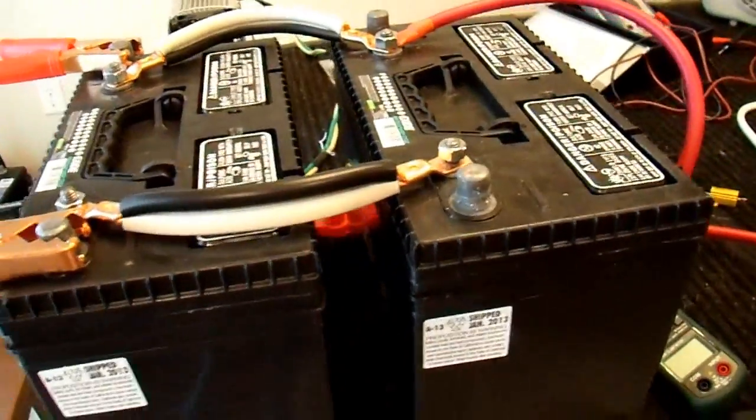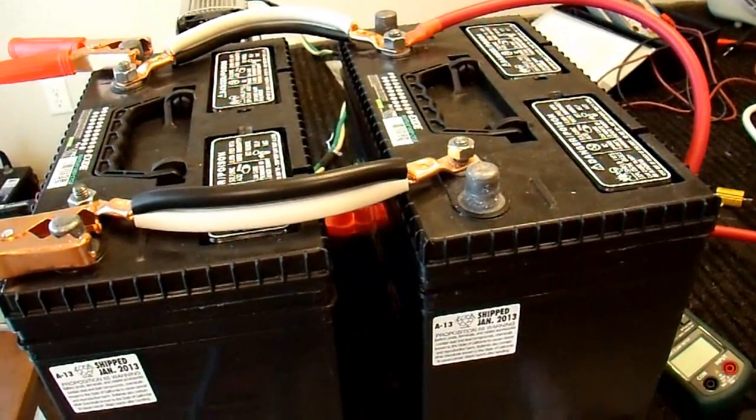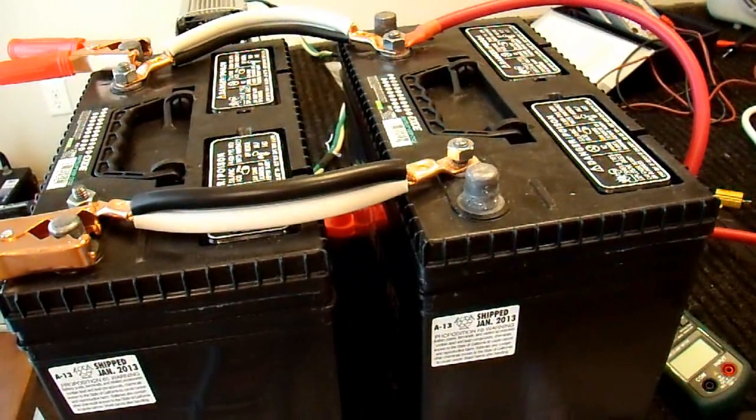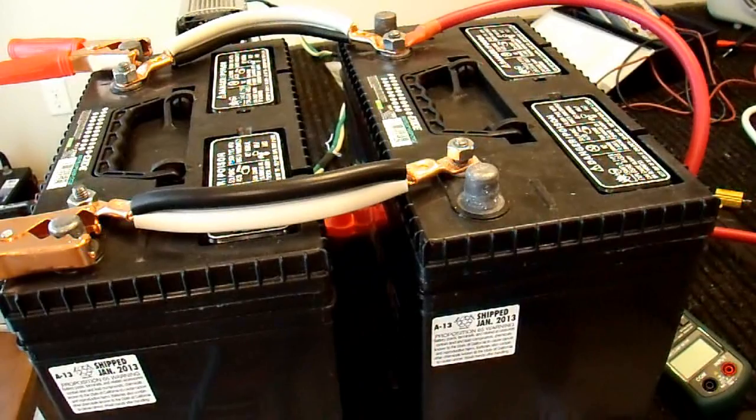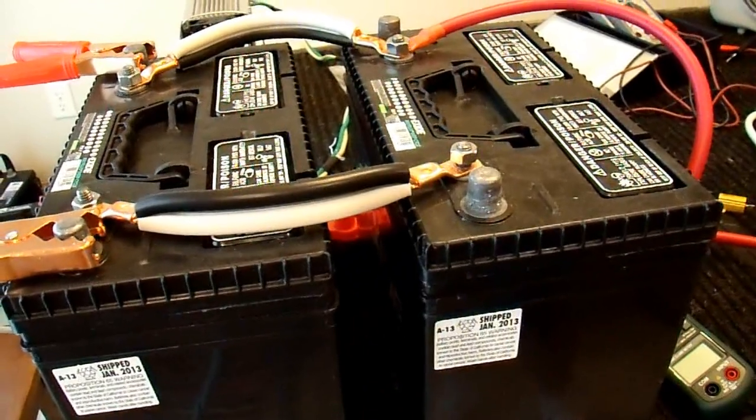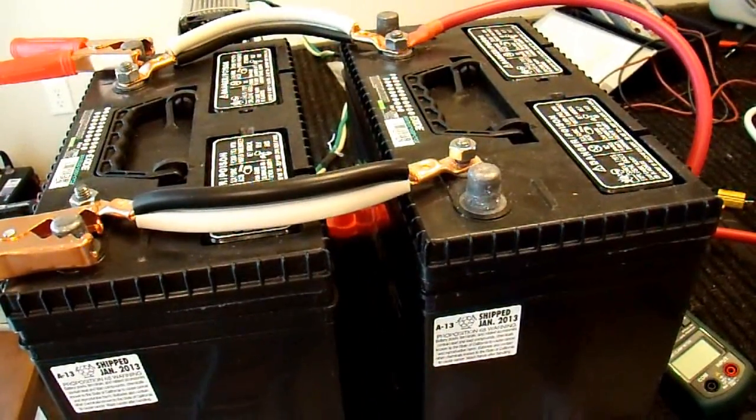What I have here are two Group 27 deep cycle batteries, probably better than what you would have in your vehicle for running an inverter, given that there's two in parallel. I also have them connected up to my standard 45-amp battery charger.